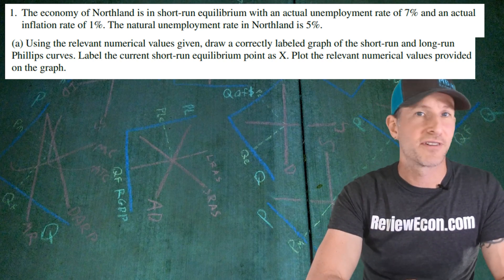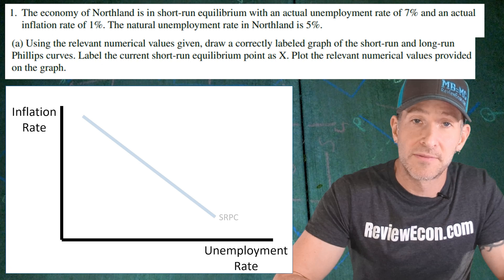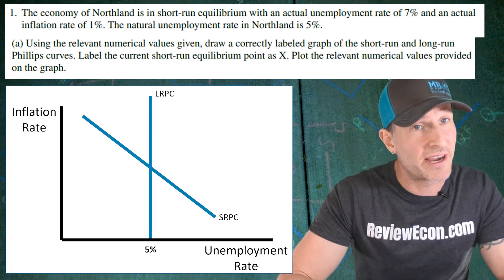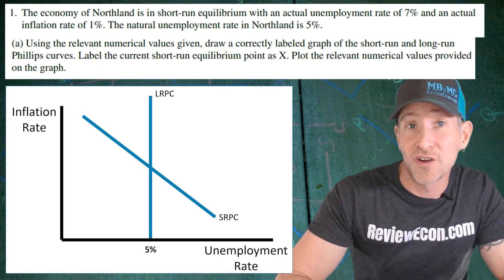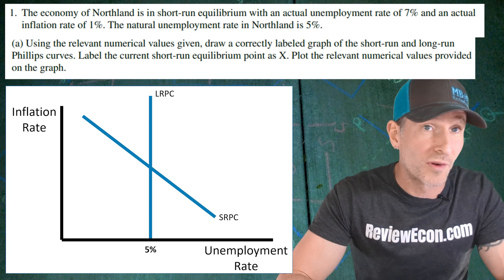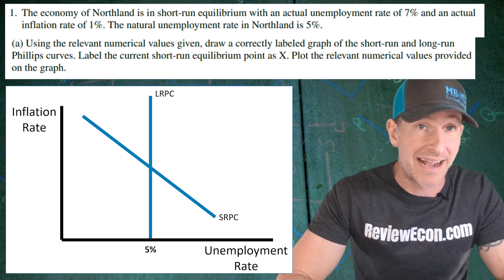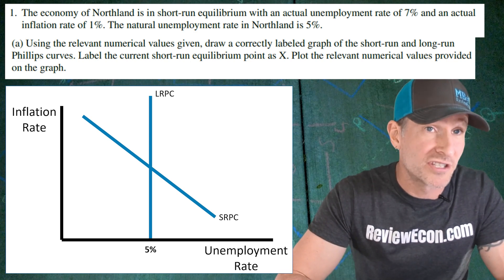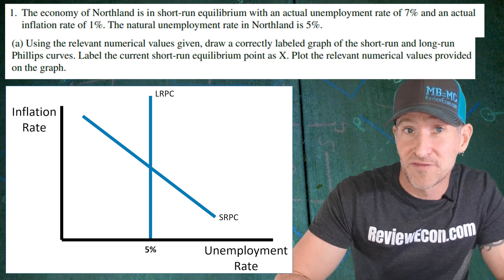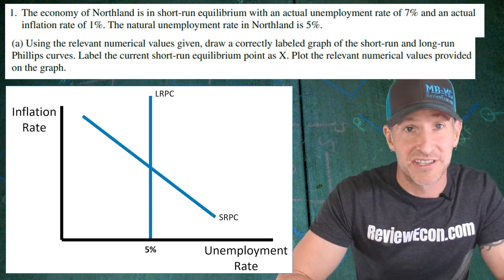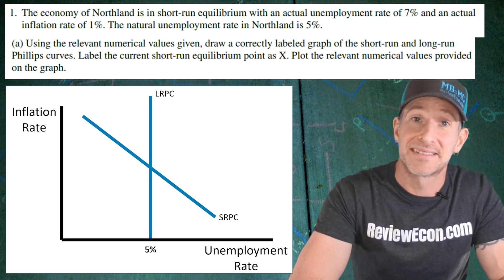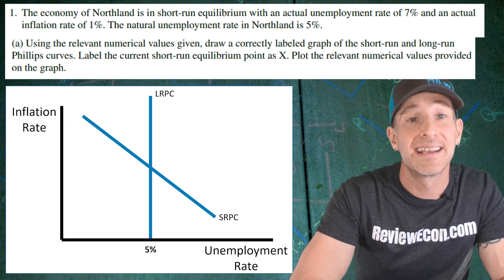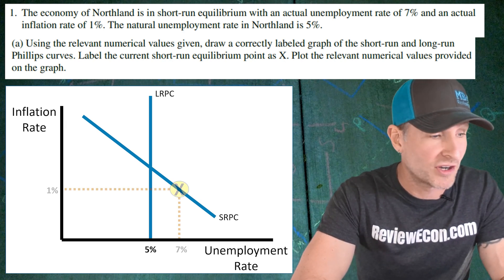We start off with our axes: the unemployment rate on the x-axis, the inflation rate on the y-axis, a vertical long-run Phillips curve with the 5% natural rate of unemployment, and a downward-sloping short-run Phillips curve. If you have that, you got yourself your first point. The second point from this graph comes from placing point X on the lower end of that short-run Phillips curve.